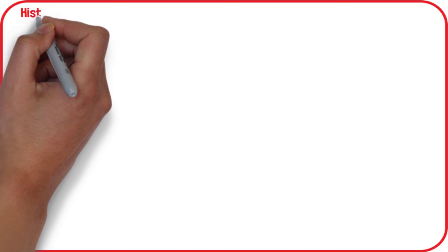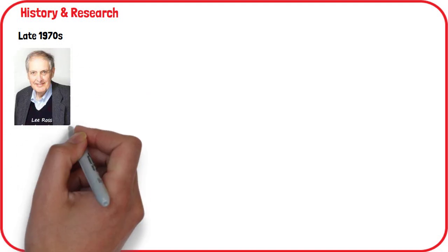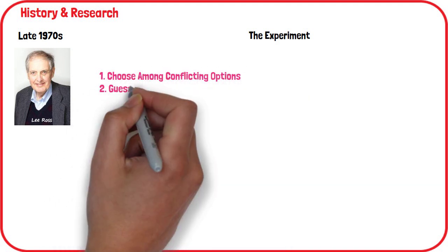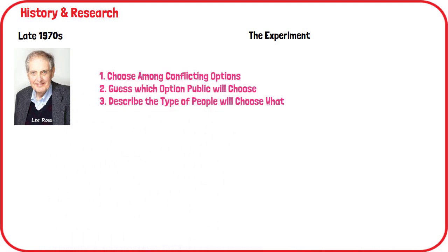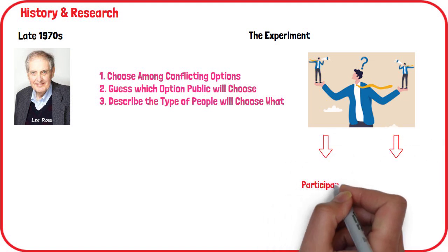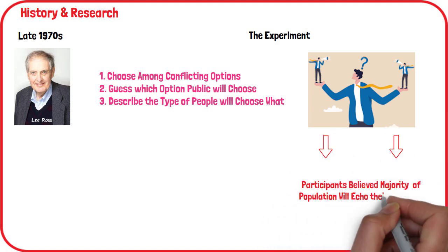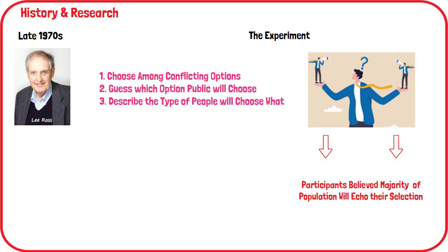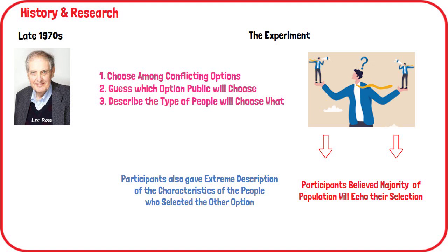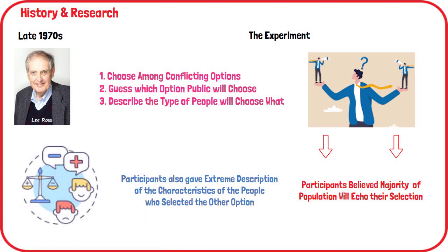The false consensus effect was first named and described in the late 1970s by researcher Lee Ross and his colleagues. In one of the experiments, the researchers asked participants to choose among conflicting options, also guess which option the public would probably choose, and describe the type of people who would choose each of the two options. The researchers discovered that no matter which option the participants selected, they believed the majority of the population would also select the same option. They also found people tended to give more extreme descriptions of the characteristics of people who would choose the option not selected by them.